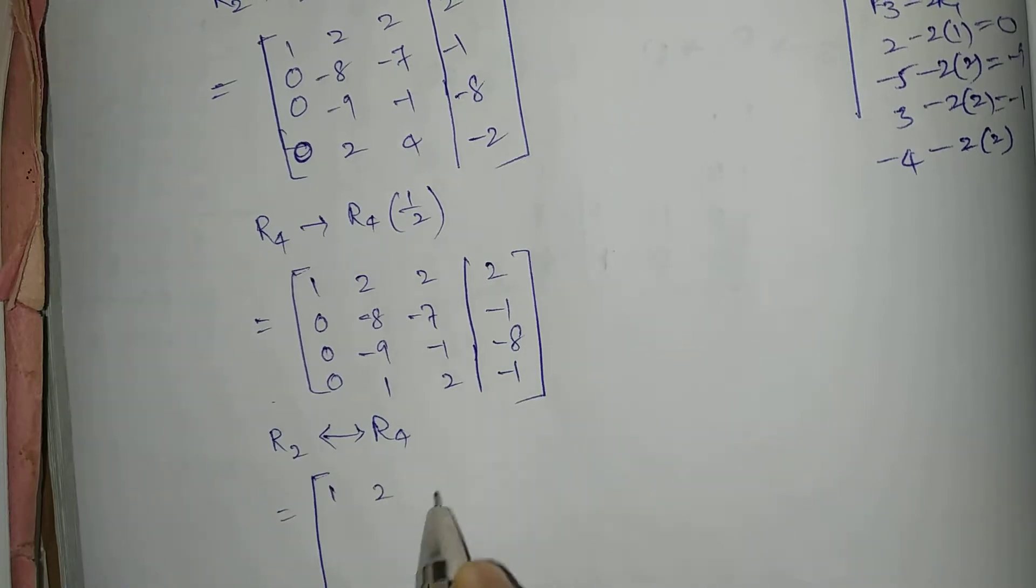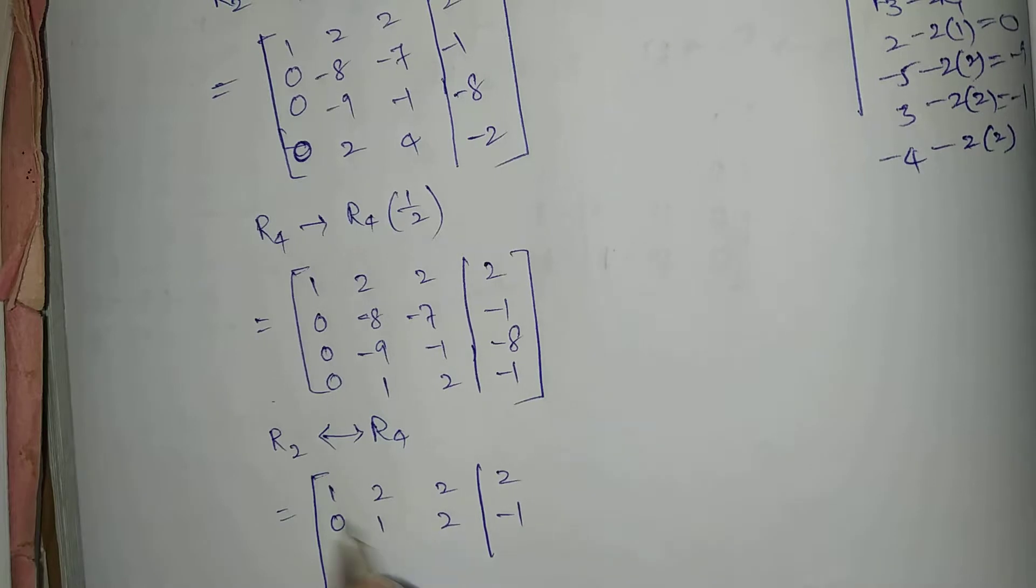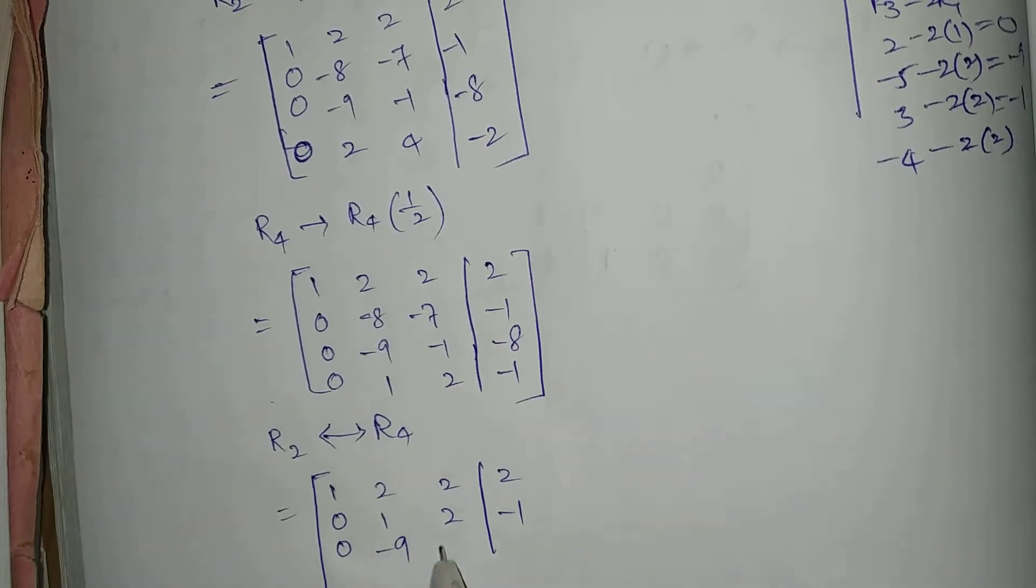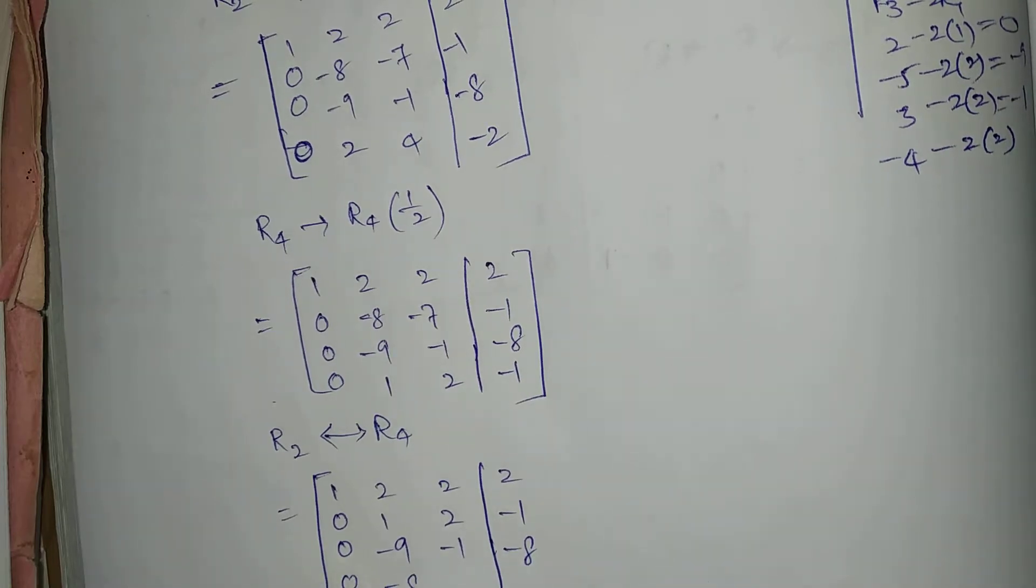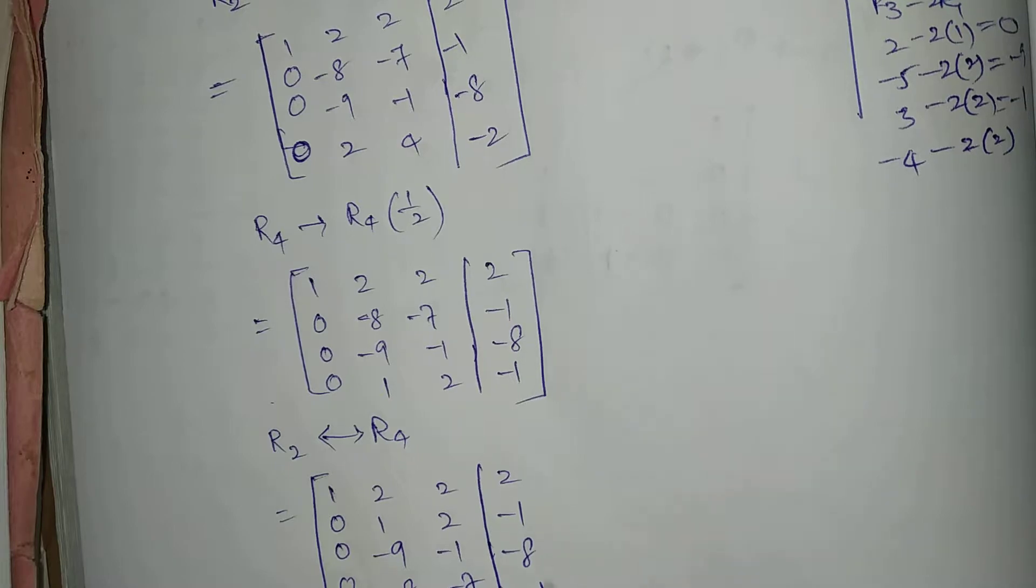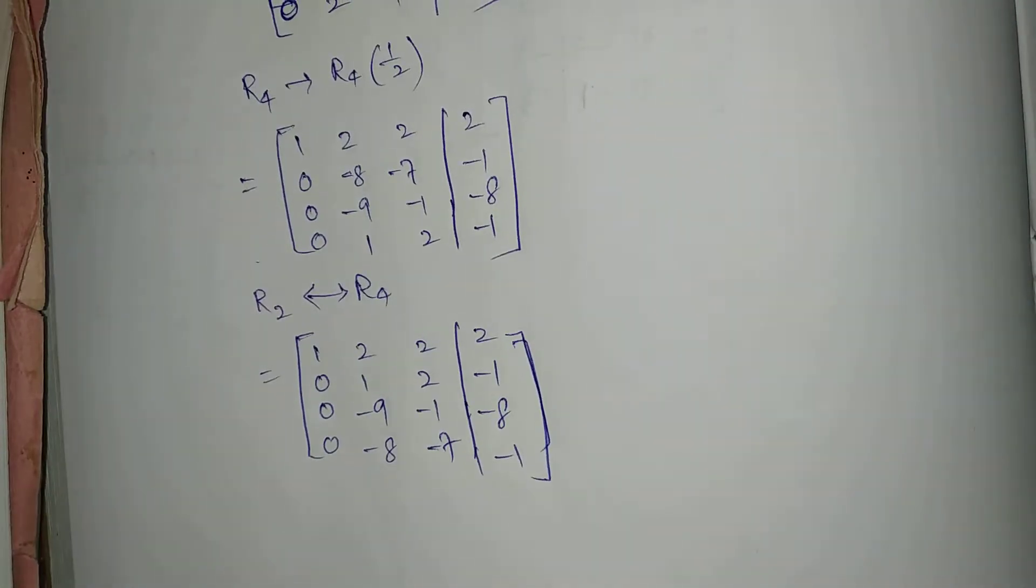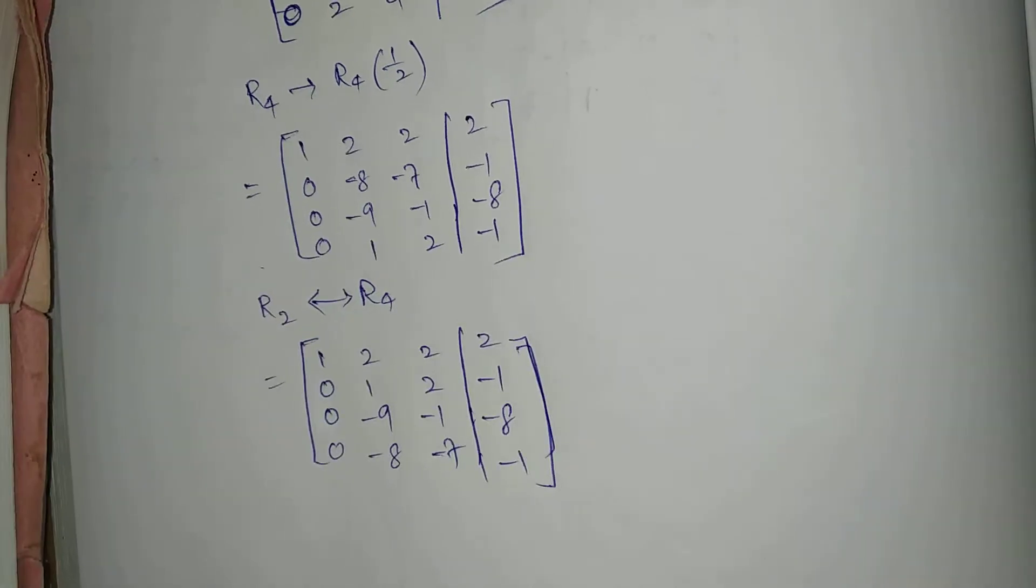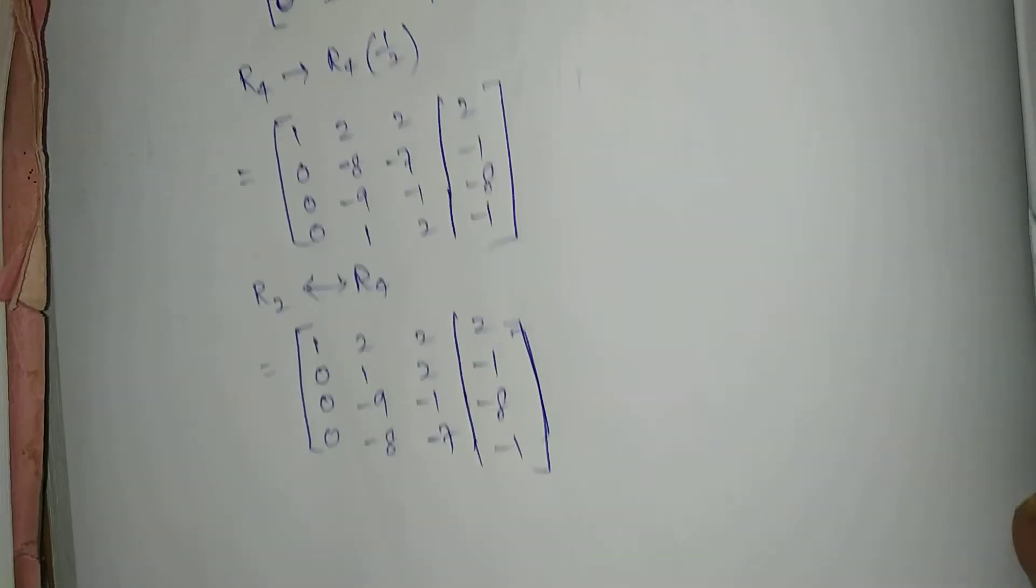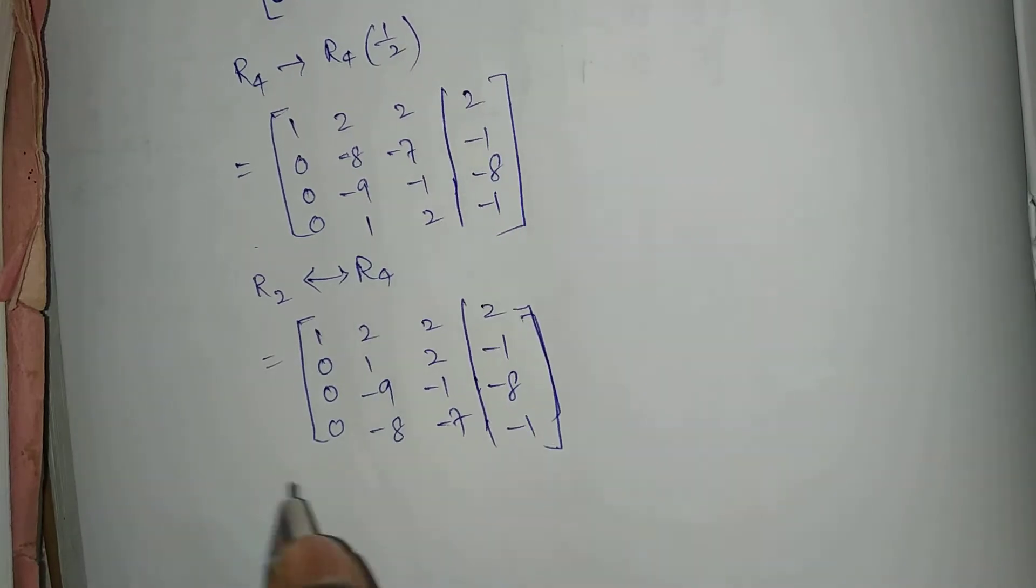R4 tends to R4 times one by two. That gives 0, 1, 2, minus 1. Now, R2 interchanging R4. So the matrix becomes 1, 2, 2, 2; 0, 1, 2, minus 1; 0, minus 9, minus 1, minus 8; 0, minus 8, minus 7, minus 1.